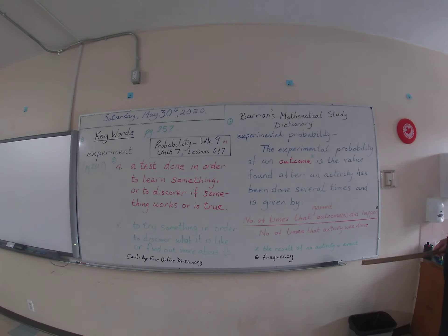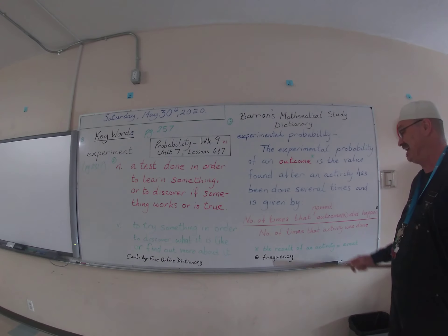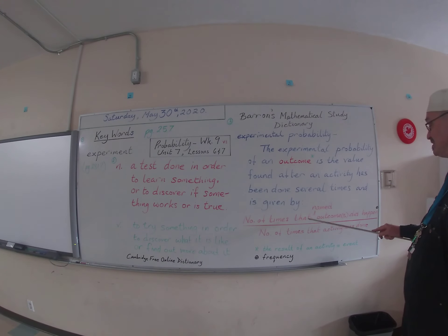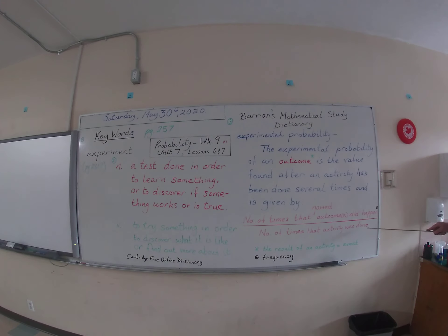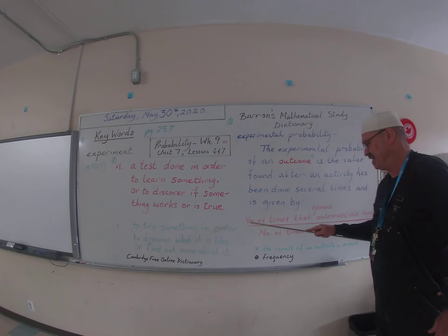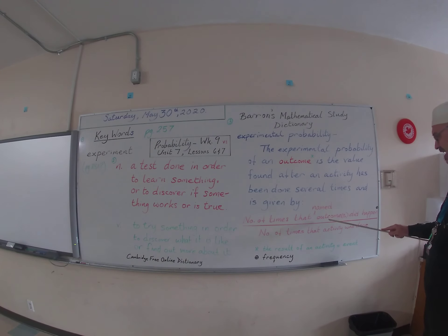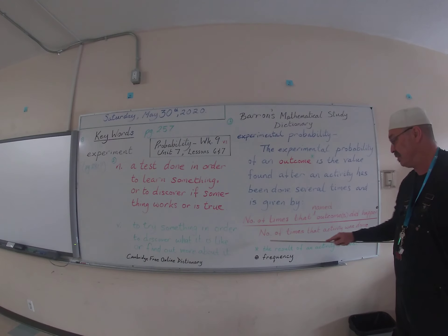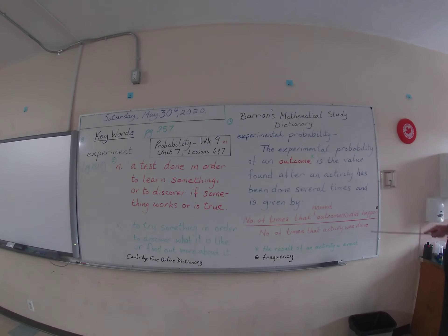And when in math they say is given by in that context, they mean usually that it's some sort of a formula. Before we move on though, I'll just remind you that outcome is the result of an activity, also known as an event. So the experimental probability of an event or the result of an activity is the value found after an activity has been done several times and is given by. And here we have the formula. So let's look at that formula. It is the number of times that an outcome or outcomes did happen over the number of times that activity was done.